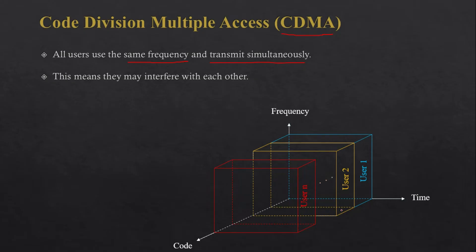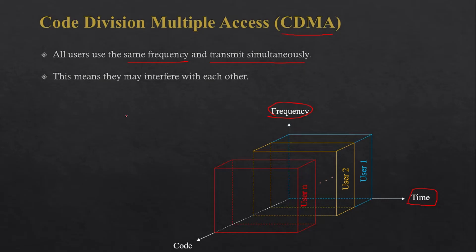So how is that going to be possible? As you can see over here, we have user 1, 2, up to N, and they are using the same time and the same frequency. All users have the same set of frequencies — user 1 has the same set as user 2 and up to user N. But in CDMA they will all be differentiated with the help of a code, so each and every user will have some unique code.